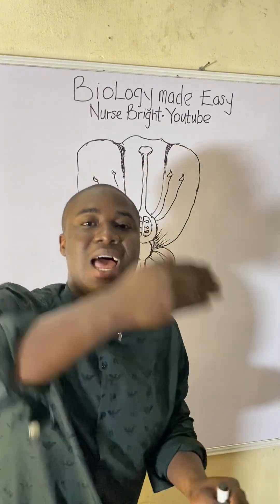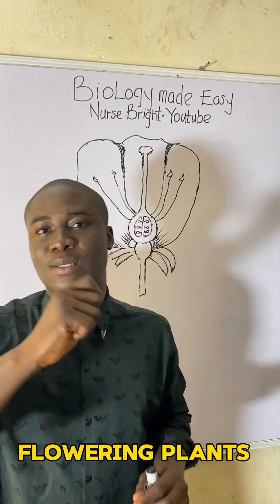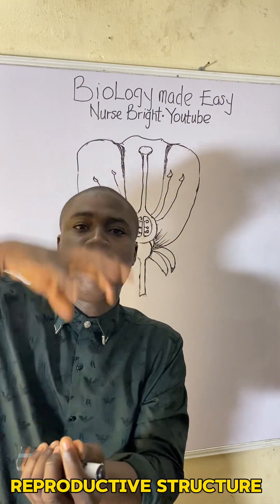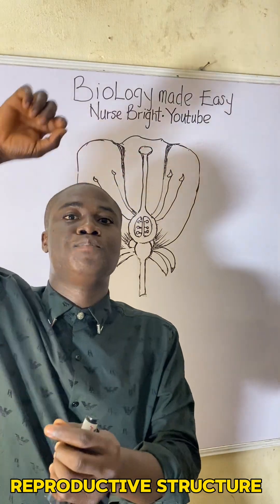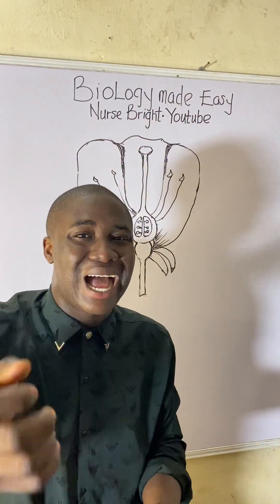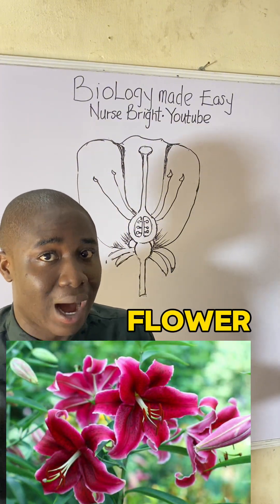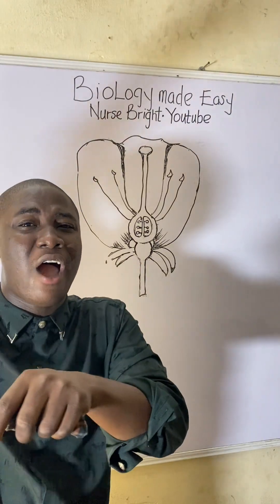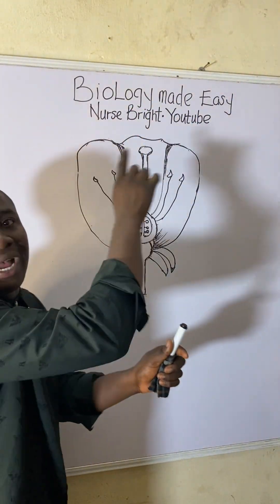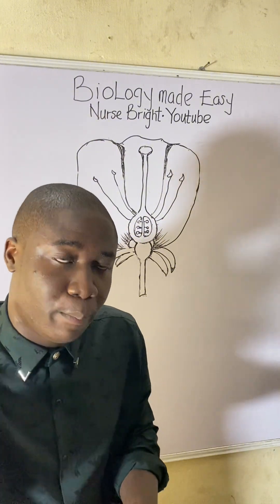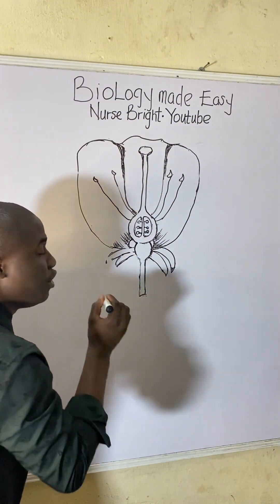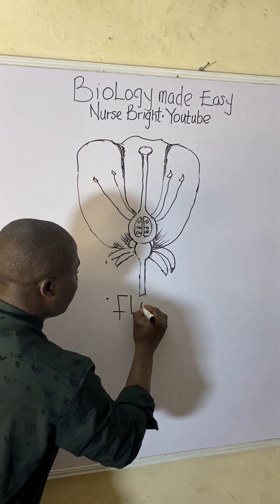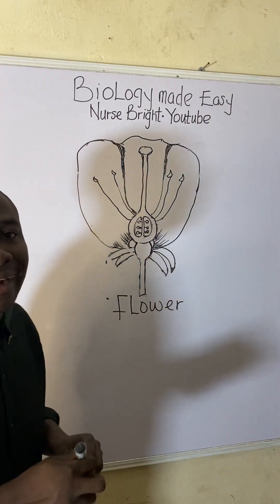It must be noted that the reproductive structure found in a flowering plant is simply called a flower. You can see the structure of the flower drawn on the board — that is the reproductive structure found in a flowering plant.